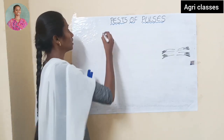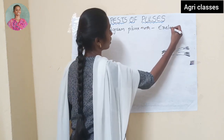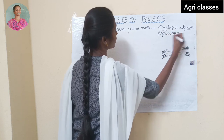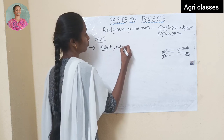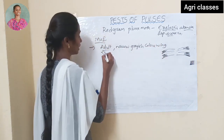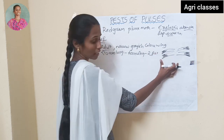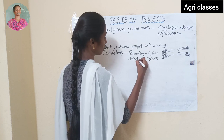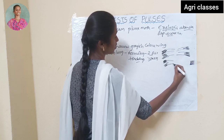Next pest: Red Gram Plume Moth. Scientific name is Exelastis atomosa, and it belongs to order Lepidoptera. Marks of identification: the adult is slender, having narrow grayish colour wings less than 12 mm long. The four wings are divided — two parts on forewings and three parts on hindwings — and we can observe fringed wings.